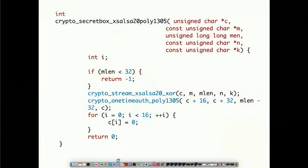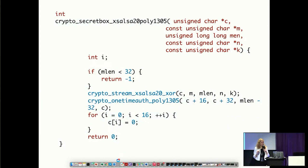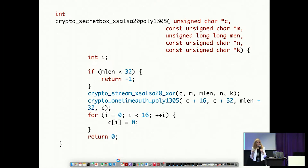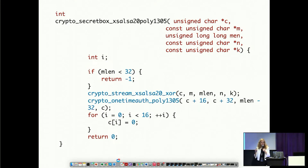Let me start my presentation with this slide. You don't need to read or understand anything here — I'm just showing you this because this code belongs to a very famous cryptographic library called Libsodium. This is an encryption function that has been formally verified to a property called constant time, which essentially means this cryptographic function does not leak the cryptographic key to the attacker.